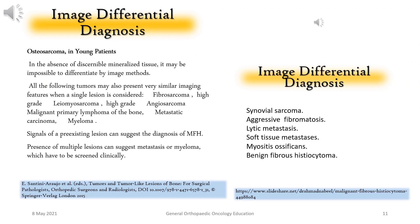Image differential diagnosis: In the absence of discernible mineralized tissue, it may be impossible to differentiate by imaging methods. All of the following tumors may present with very similar imaging features when a single lesion is considered: fibrosarcoma, high-grade leiomyosarcoma, high-grade angiosarcoma, malignant primary lymphoma of the bone, metastatic carcinoma, and myeloma. Signals of a pre-existing lesion can suggest the diagnosis of MFH, and the presence of multiple lesions can suggest metastasis or myeloma.